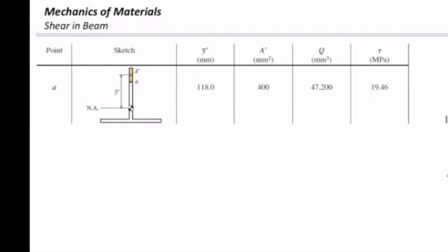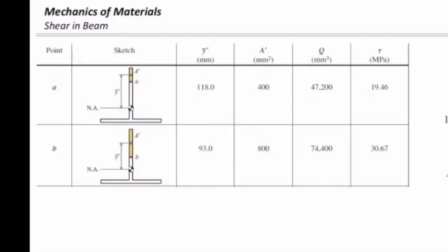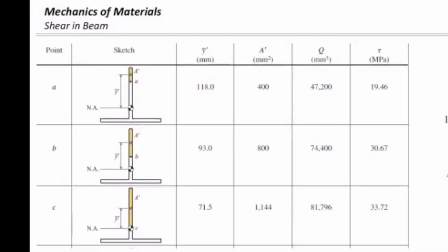If I want to calculate the value at points B and C, I use the same procedure. The only things that change are the value of Q and the value of T — which in this problem is the same because the thickness of the flange is the same. But in all three points I'm calculating the vertical shear stress.